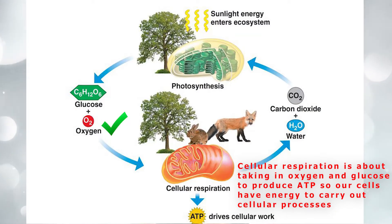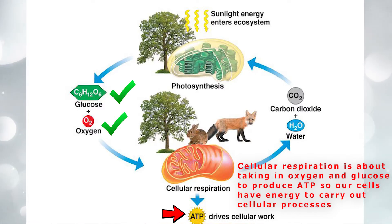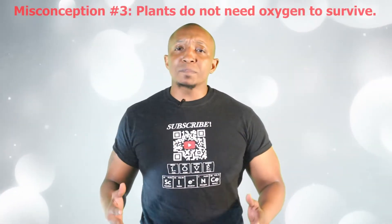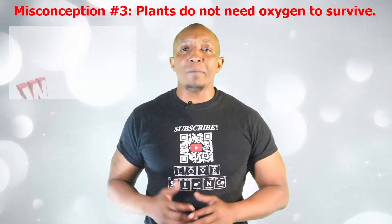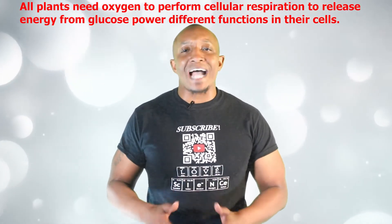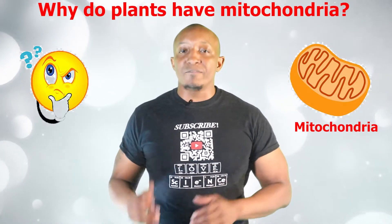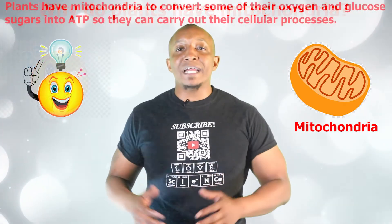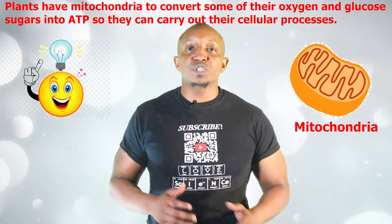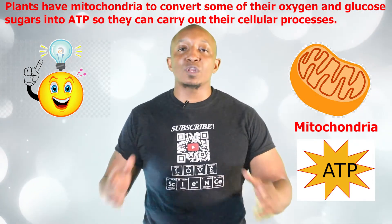Cellular respiration is more than just breathing oxygen. It's about taking in oxygen and glucose molecules to produce ATP so our cells can have the energy they need to carry out cellular processes and remove waste that our cells don't need. Misconception number three — and this is a huge one. Most students believe that plants only need to take in carbon dioxide from the air to survive. But what a lot of us don't know is that plants also need oxygen to power their cellular respiration processes. Think about this: why do plants have mitochondria? The answer is simple. Plants have mitochondria to convert some of their oxygen and glucose sugars into ATP so they can carry out their cellular processes.